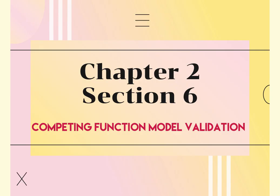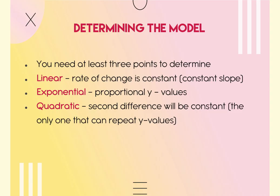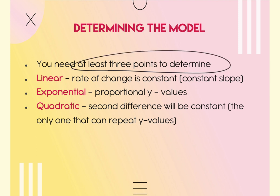Section 2.6 is called competing function model validation. It teaches you how to find the most appropriate model from data — using a graph, using points, and using residual plots. We are now looping in linear, exponential, and quadratic as options. If given points, you need at least three to determine the model type, because two points won't give you enough to identify a common ratio.